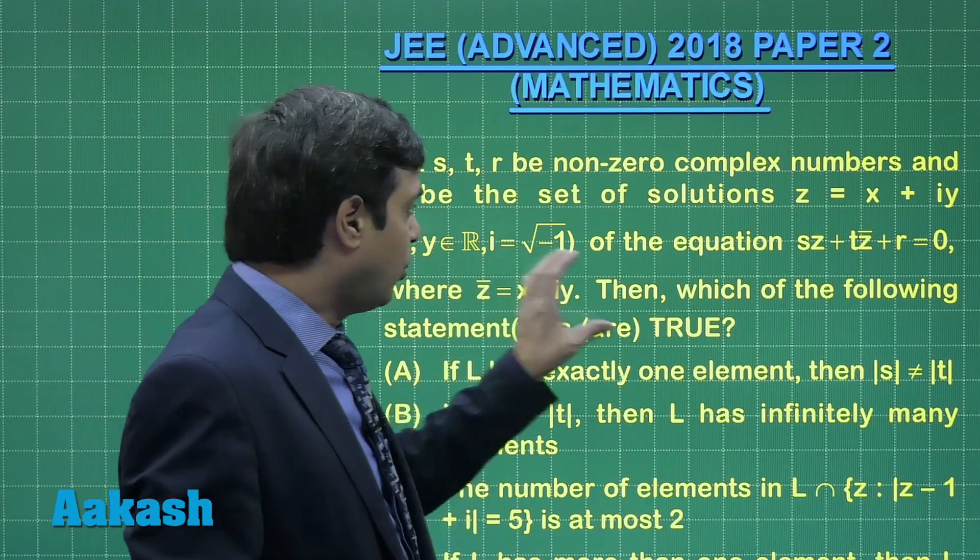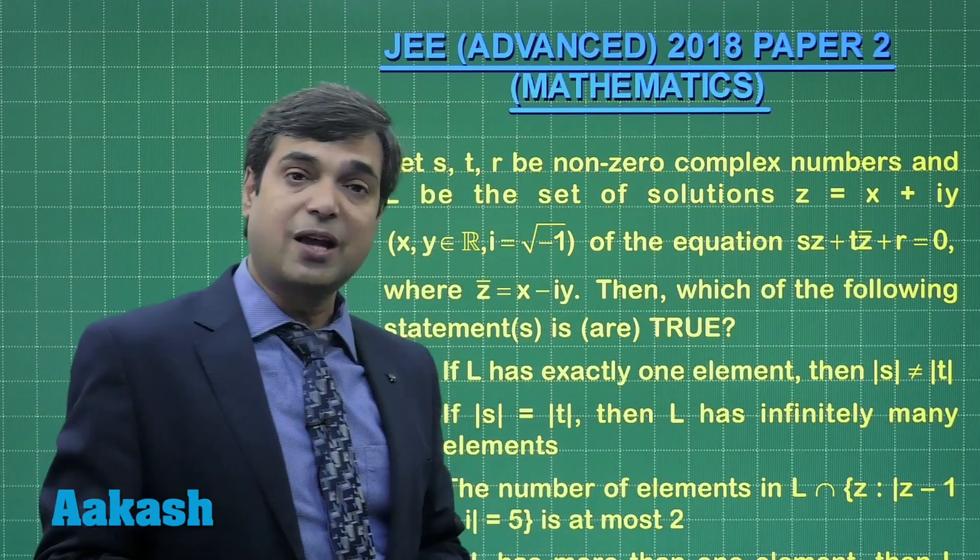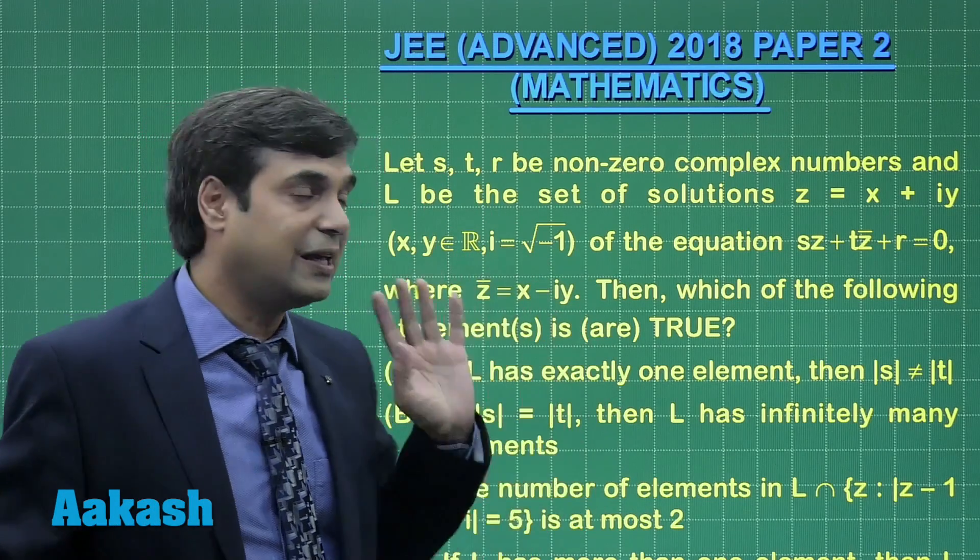Four options are given. One equation is given: Sz plus Tz̄ plus r equals 0, and we have to talk about the solutions of this equation.